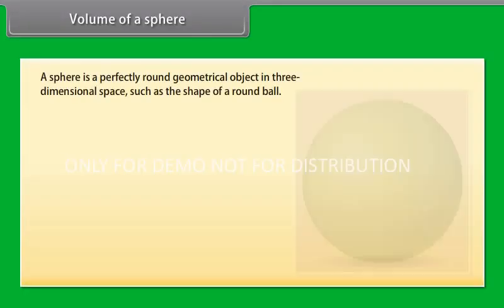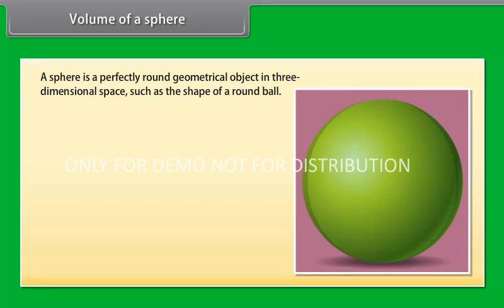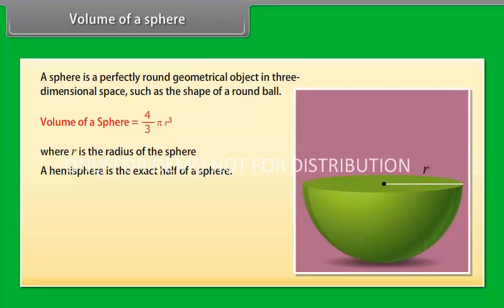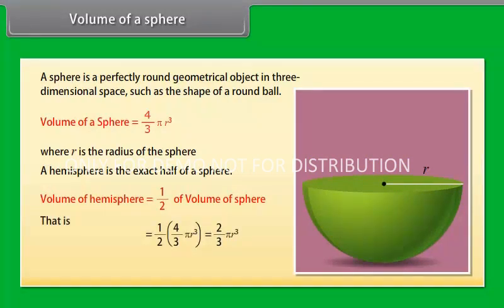A sphere is a perfectly round geometrical object in three-dimensional space, such as the shape of a round ball. The volume of a sphere is given by (4/3)πr³, where r is the radius of the sphere. A hemisphere is the exact half of a sphere, and its volume is half the volume of a sphere — that is, (1/2) × (4/3)πr³ = (2/3)πr³, where r is the radius.